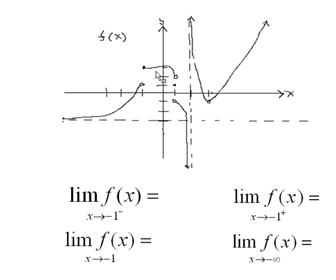Determining limits from a graph. Here we have a graph of f, and it appears to be a piecewise function with a horizontal asymptote and a vertical asymptote.